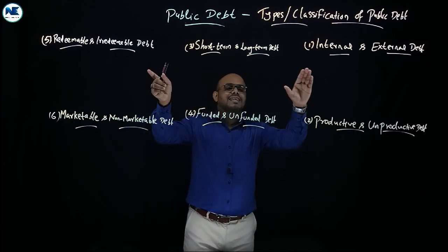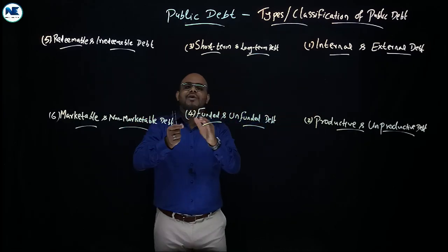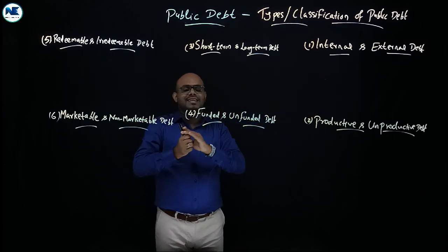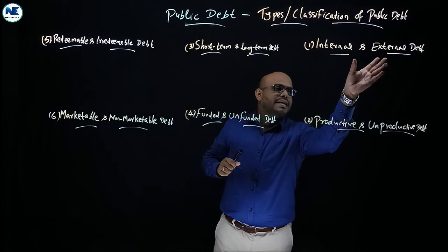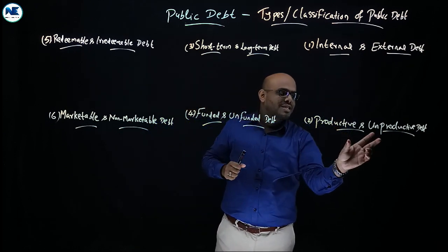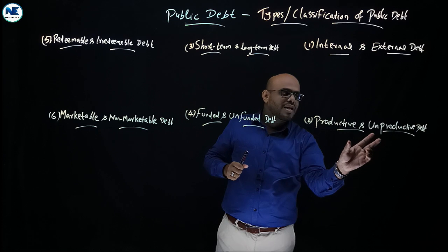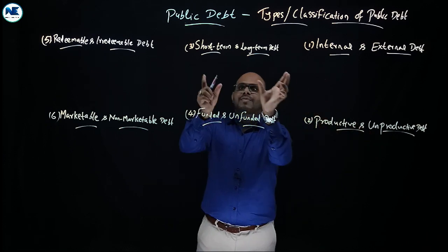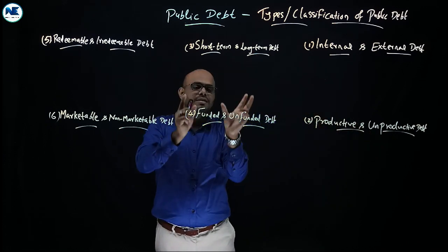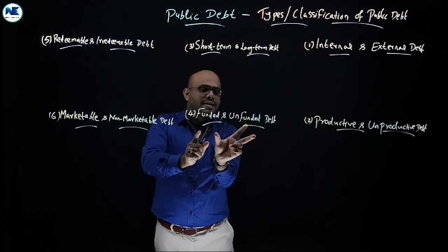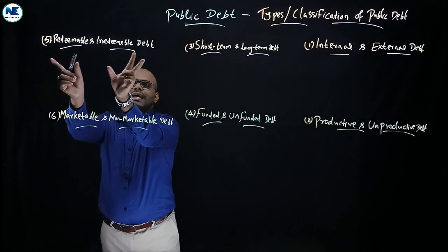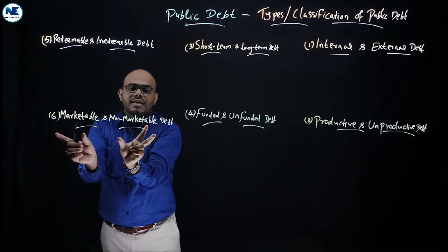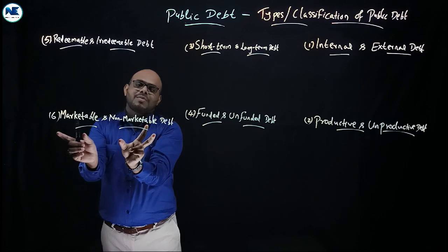We can see the major classification of public debt types. These include internal and external debt, productive and unproductive debt, short-term and long-term debt, funded and unfunded debt, redeemable and irredeemable debt, and marketable and non-marketable debt.